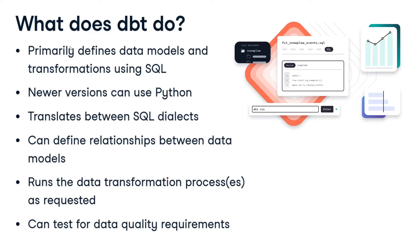What does dbt do? It primarily defines data models and transformations using SQL. We write SQL queries to model data stored in data warehouses. In newer versions of dbt, you can even use Python, though we won't cover that in this part of the course. dbt also translates SQL dialects, can define relationships between data models, and runs the data transformation process as requested.